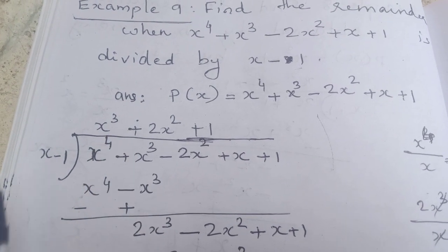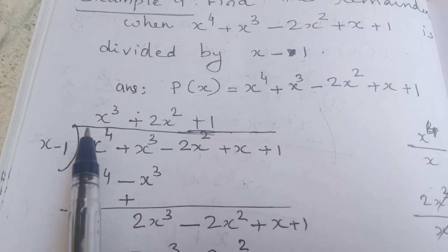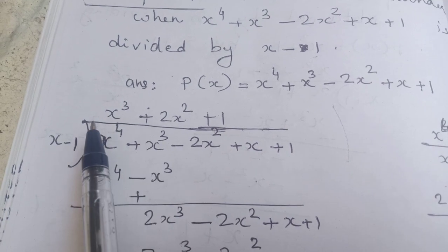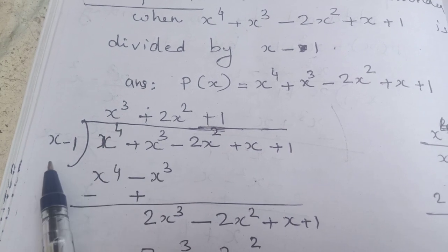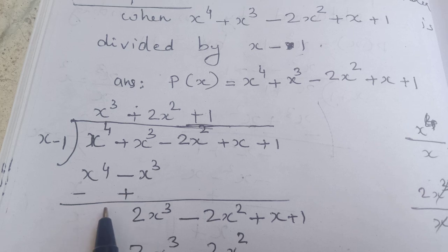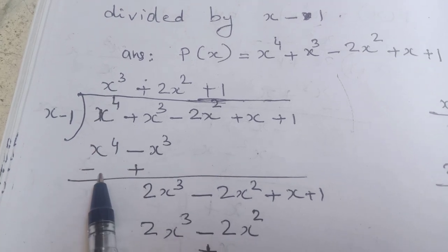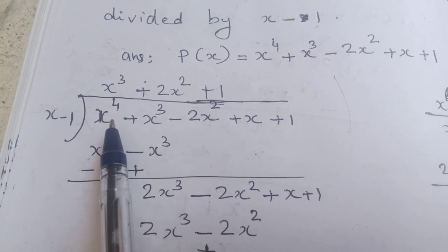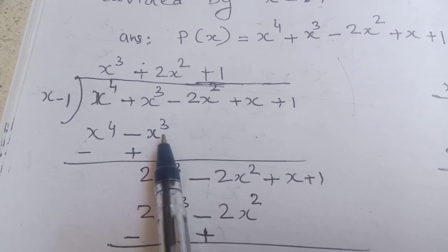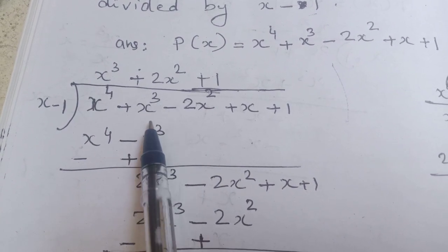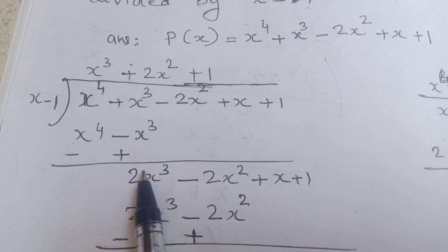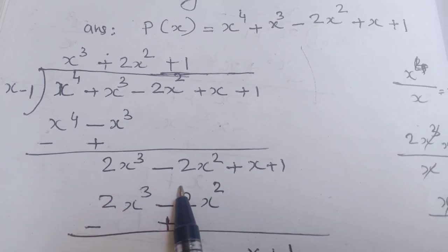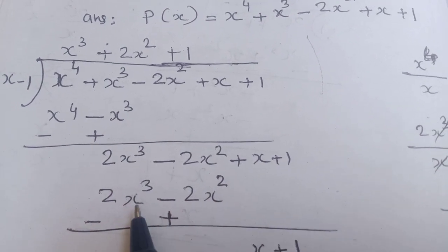Write x³ here, then multiply: x³ into (x − 1) gives x⁴ minus x³. Change the sign — minus becomes plus — so those terms cancel, and we get 2x³. Bring down the remaining terms: 2x³ − 2x² + x + 1.